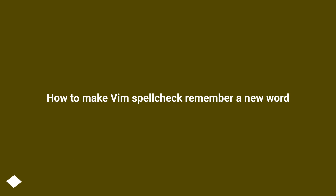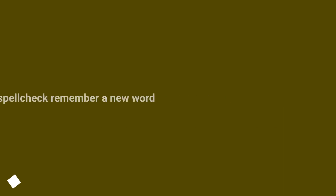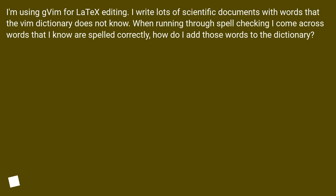How to make Vim spellcheck remember a new word. I'm using Vim for LaTeX editing. I write lots of scientific documents with words that the Vim dictionary does not know. When running through spell checking, I come across words that I know are spelled correctly. How do I add those words to the dictionary?